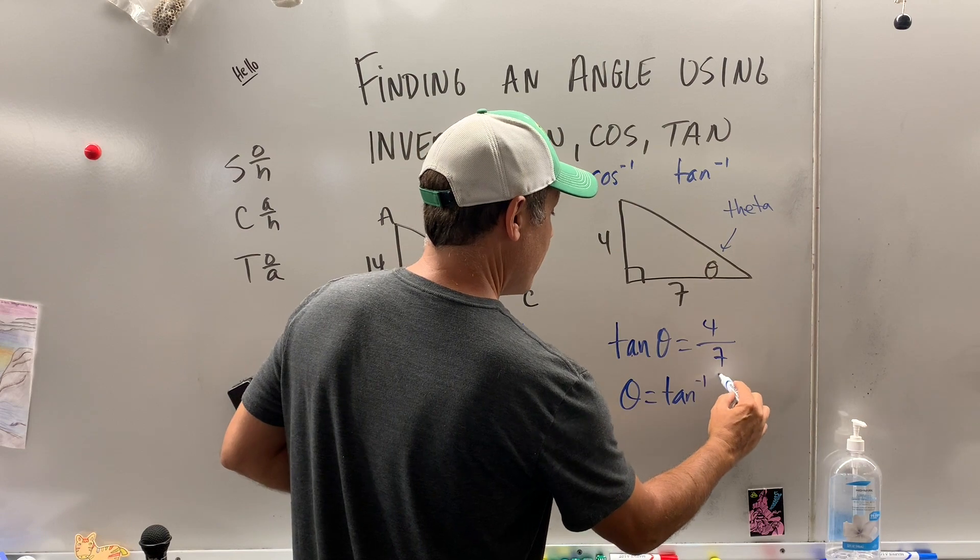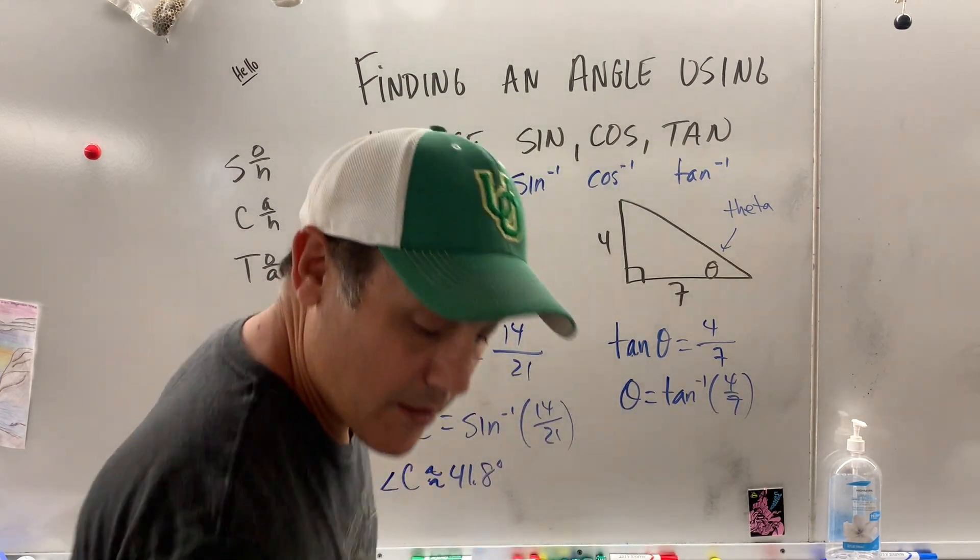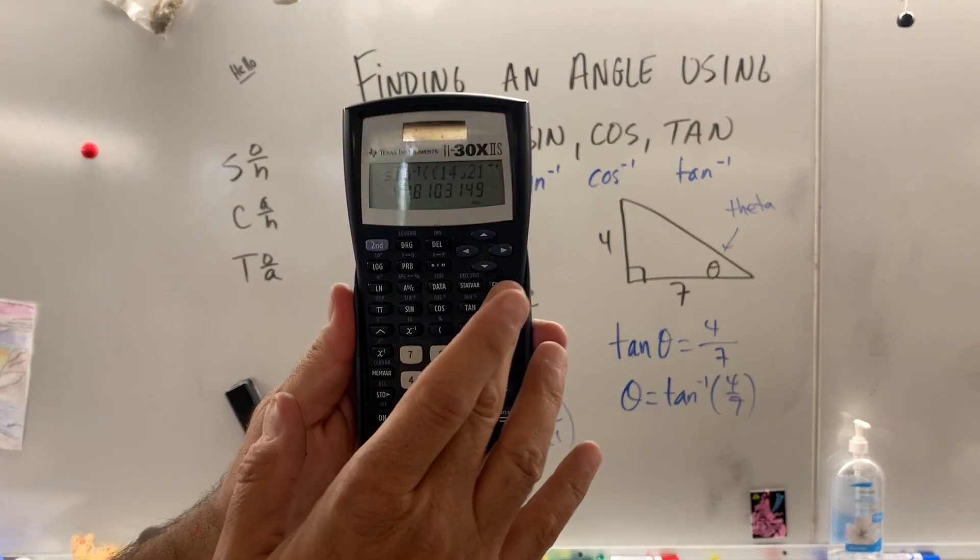You guessed it, the inverse tangent of 4 over 7. I'll show you it on the calculator one more time. Let's clear this bad boy.